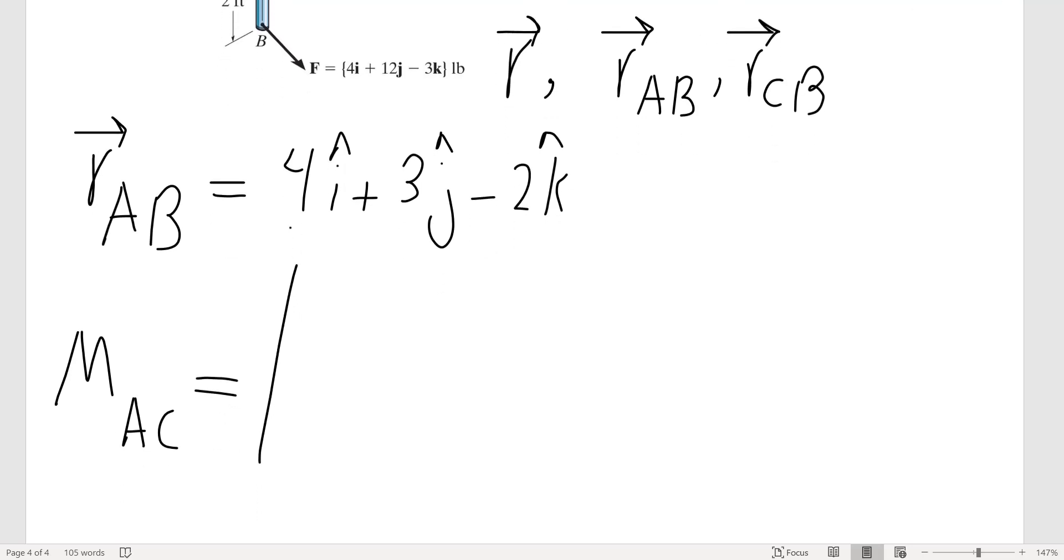The second row would be the position vector: 4, 3, negative 2. And the third row would be my force, which this problem has given me in Cartesian form, so I don't need to find that.